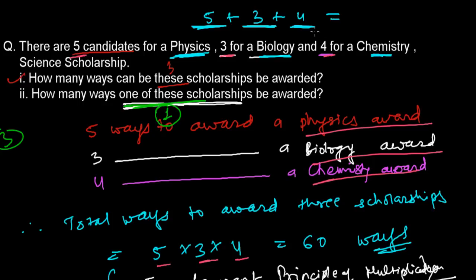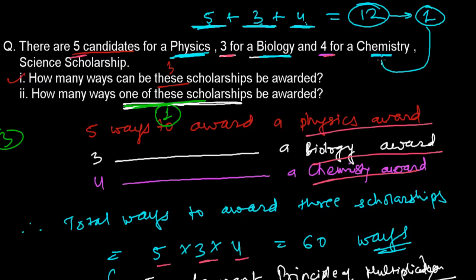So altogether, how many possible lucky candidates are there? Five plus three plus four: five plus three is eight, and eight plus four is twelve. So there are twelve possible lucky winners, but one of them will be awarded. Out of those twelve candidates, one will receive the scholarship — maybe a physics scholarship, maybe a biology scholarship, or maybe a chemistry scholarship. So there are twelve ways one of these scholarships can be awarded.